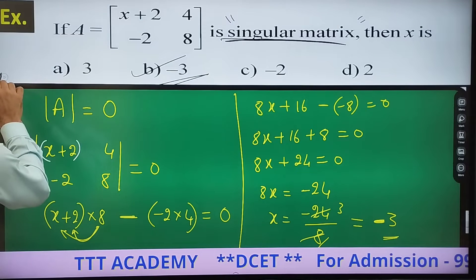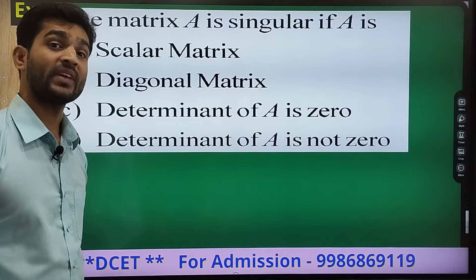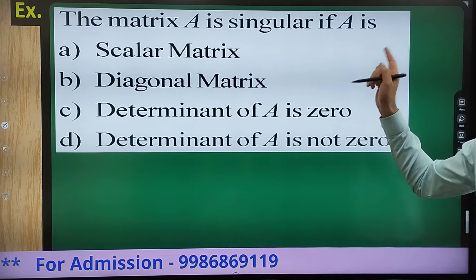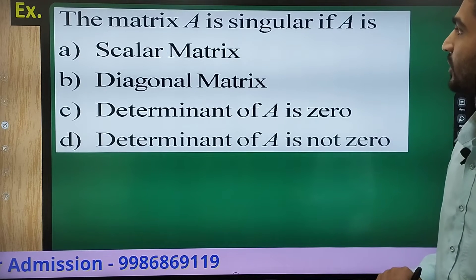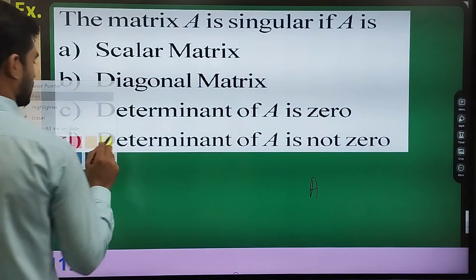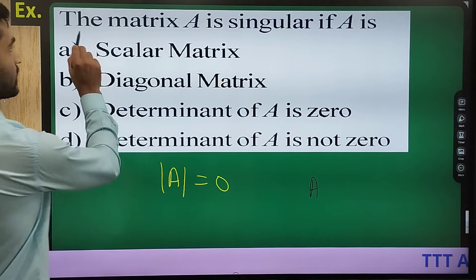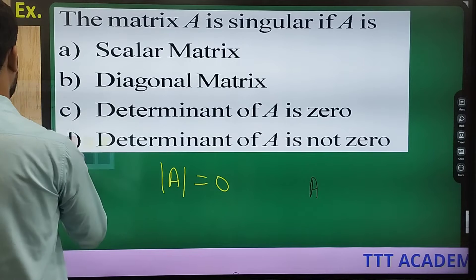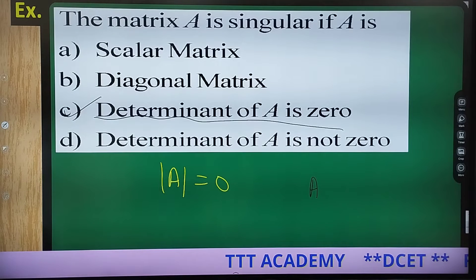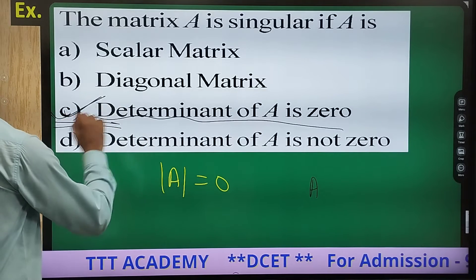Next question: the matrix A is singular if A is dash — there are four options. The condition for singular matrix is that determinant of A will be equal to 0. So the right answer is option C: determinant of A equals 0.